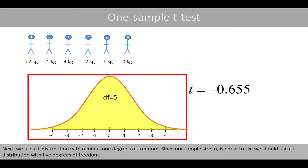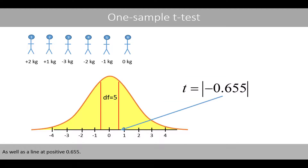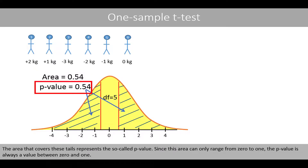Next, we use the t-distribution with n minus 1 degrees of freedom. Since our sample size n is equal to 6, we should use the t-distribution with 5 degrees of freedom. Let's add a vertical line in this distribution at negative 0.655, as well as a line at positive 0.655. By using software, we can calculate the area that covers these tails to 0.54. The area that covers these tails represents the so-called p-value.